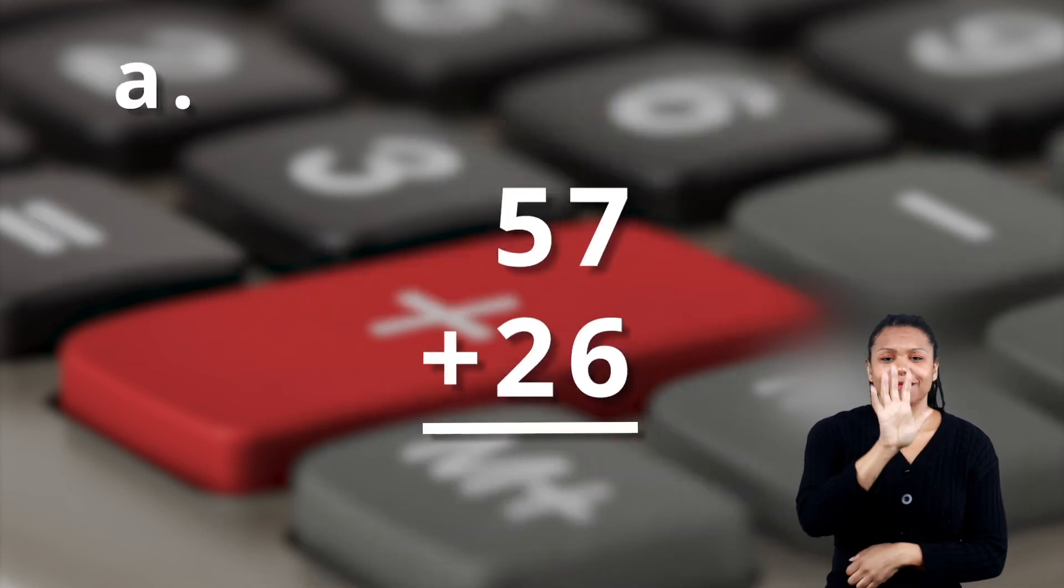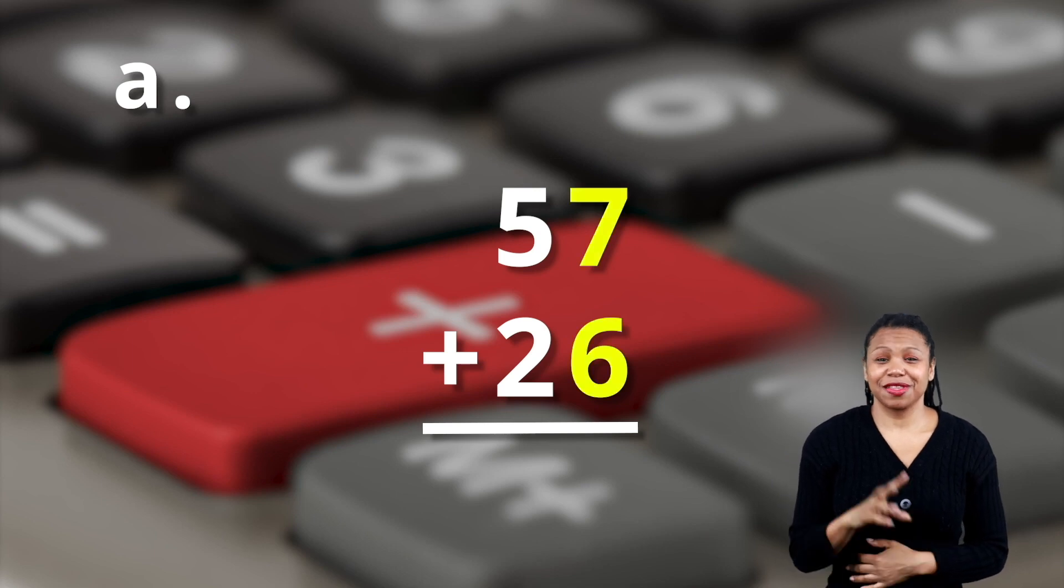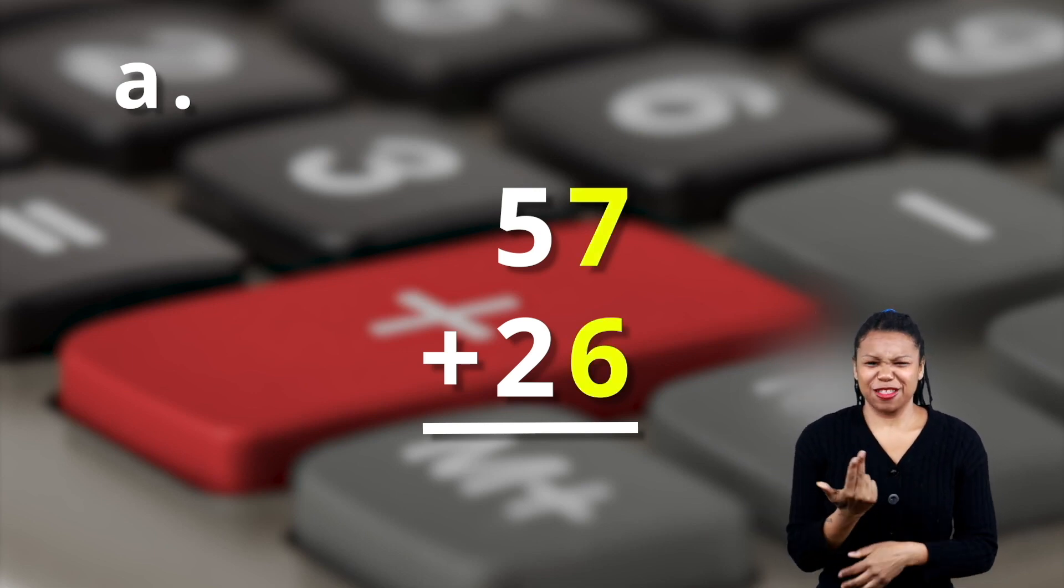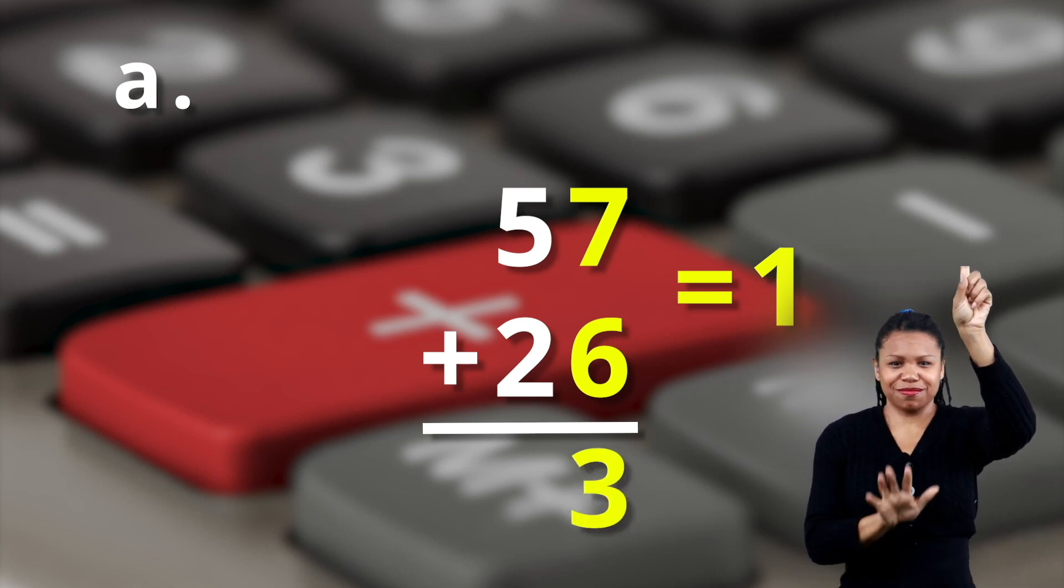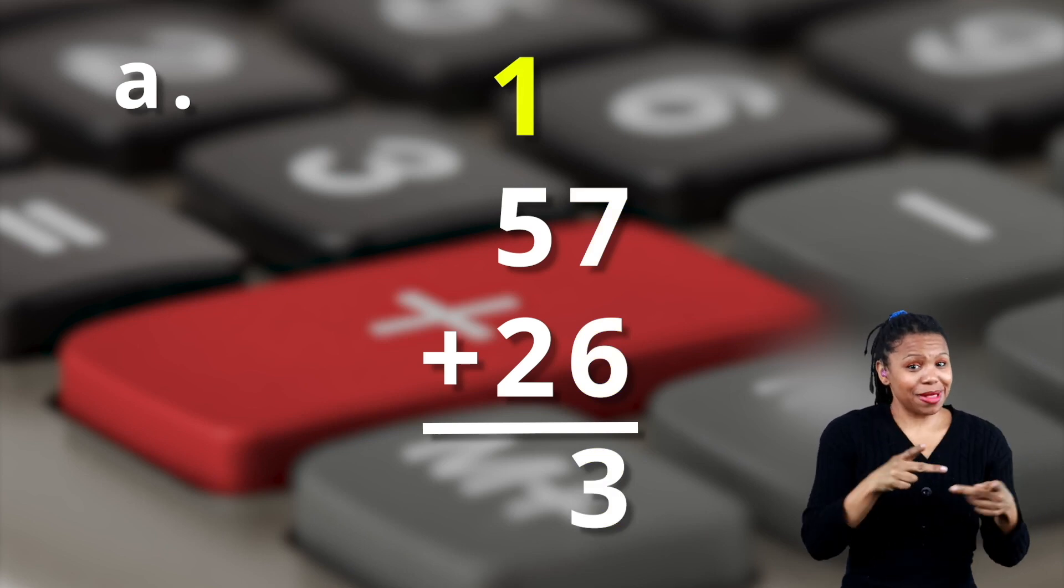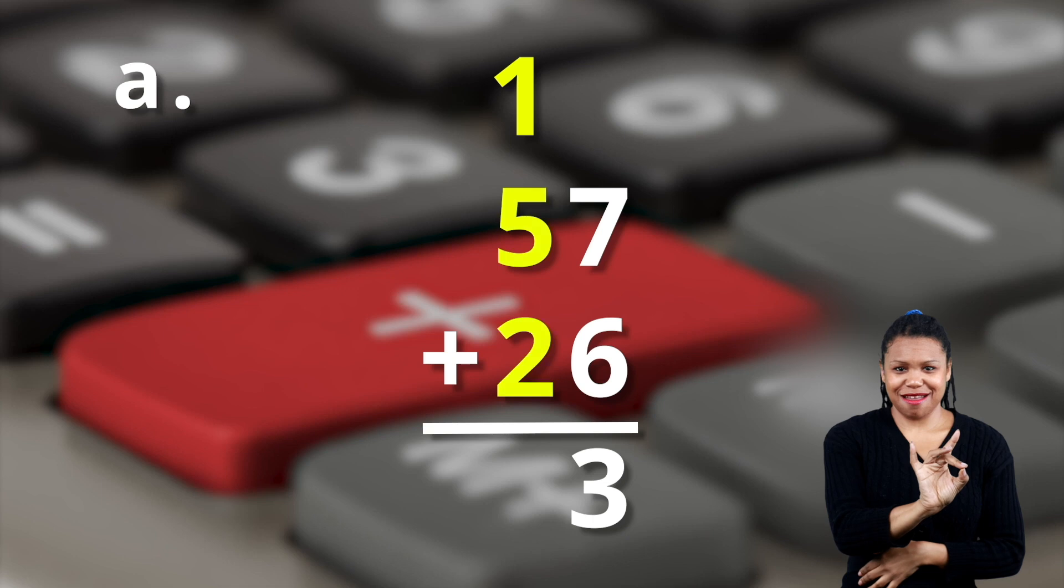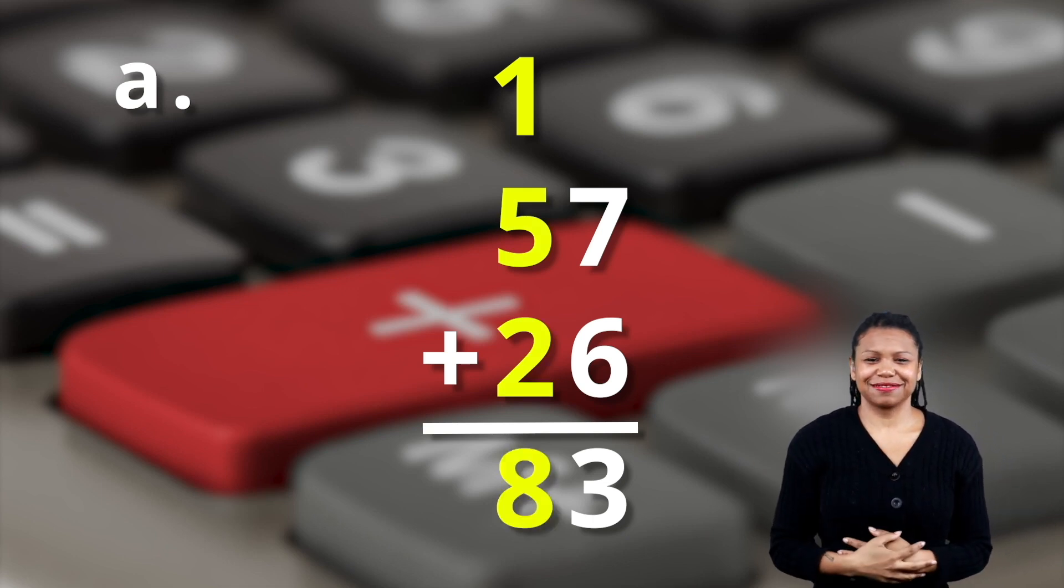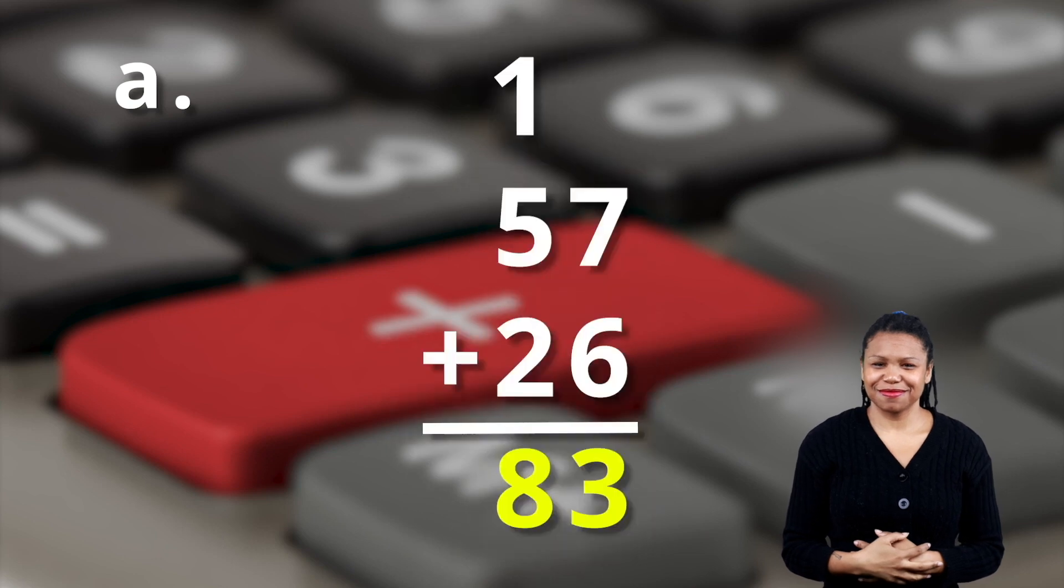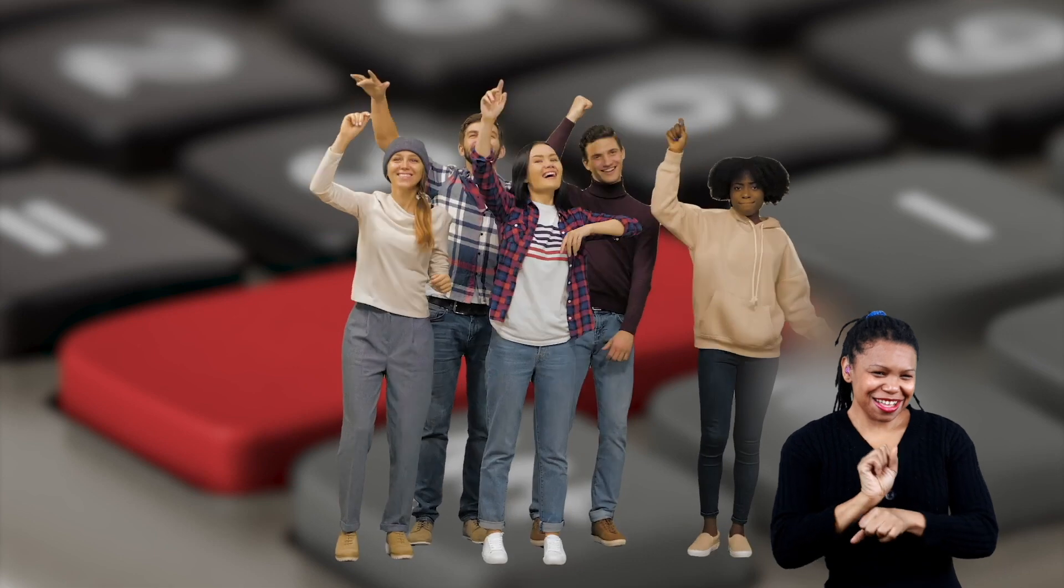Example A. You've got fifty-seven plus twenty-six. Seven plus six equals thirteen. A one goes in the tens place above the five. One plus five plus two equals eight. So fifty-seven plus twenty-six is eighty-three. Super simple. Well done.